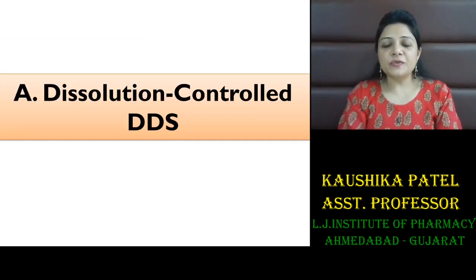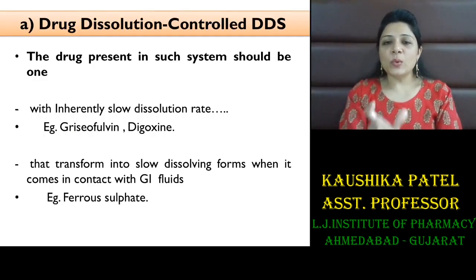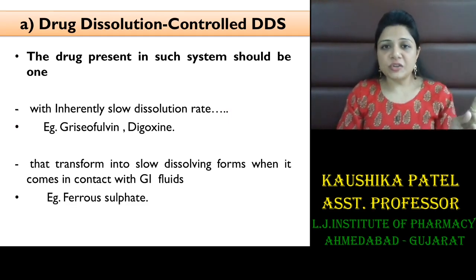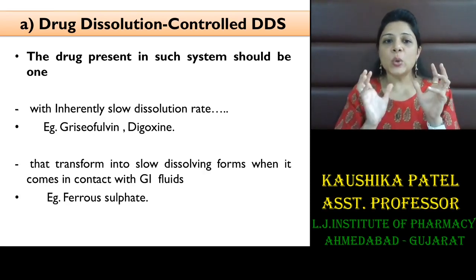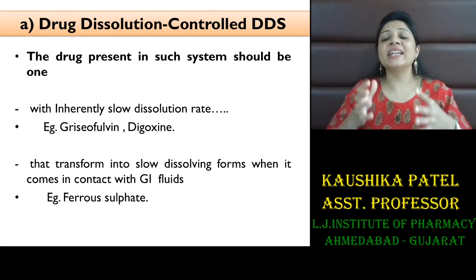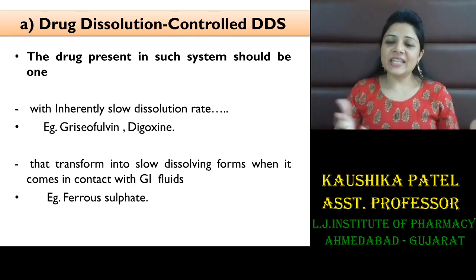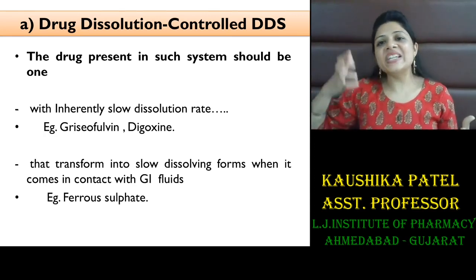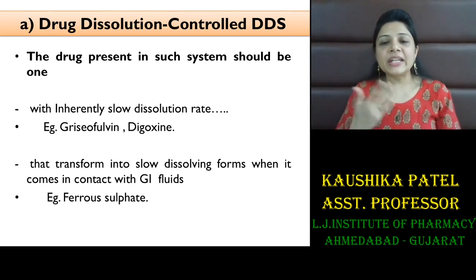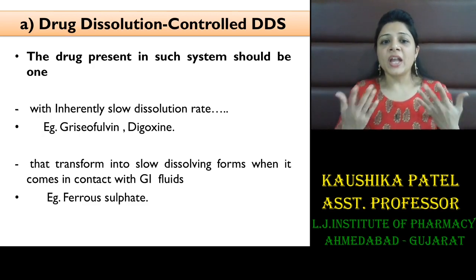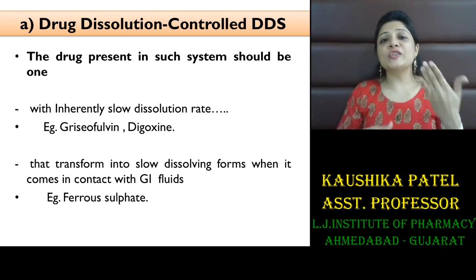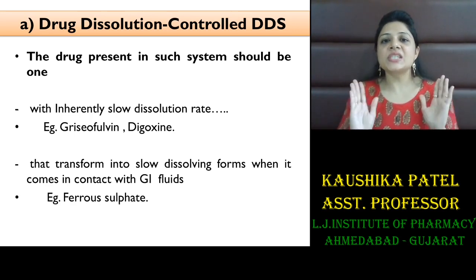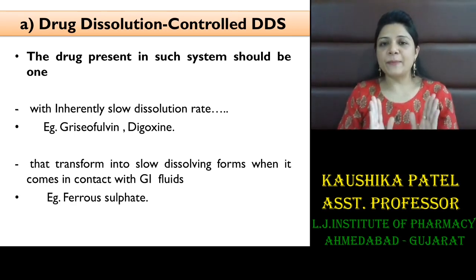Regarding the different mechanisms, the first one is dissolution control drug delivery system. Either you can control the dissolution rate of the drug or that of the polymer. When you have a drug which is already having a slow dissolution rate, the drug will dissolve gradually and release gradually, so you don't need to add any other polymer or mechanism. Like glycerophiline, or drugs in salt form that convert into slow-dissolving form after coming in contact with gastrointestinal fluid — in such cases also you can go for this type of approach.